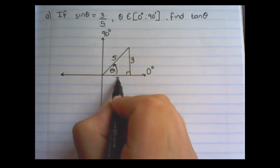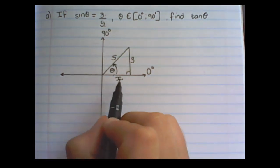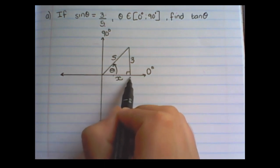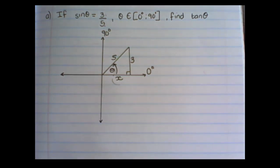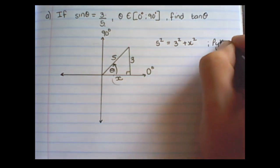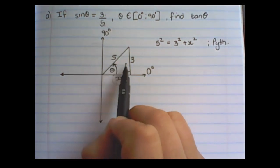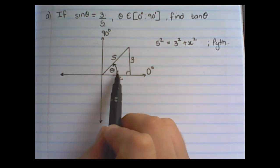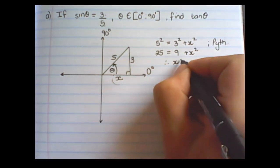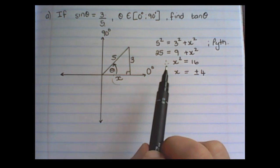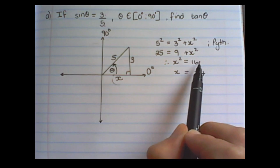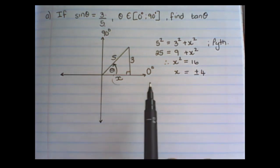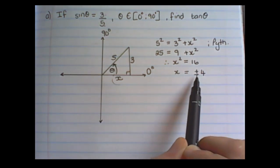I can now find the length of x. Remember this is the x-axis so this length is represented on the x-axis. So I can find the length of x using Pythagoras. So 5² is equal to 3² plus x². So if I solve for x², x² is equal to 16. And I take the square root on both sides, so x is plus or minus 4.